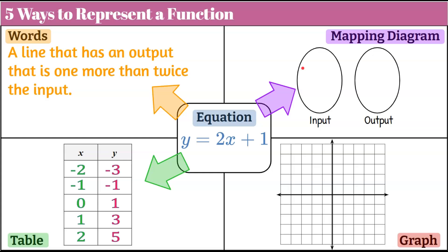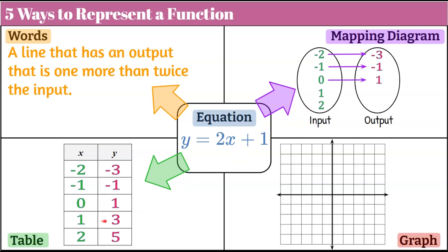Moving on to our mapping diagram. We're going to take our inputs from our table, write them in order from least to greatest, and then map them to their outputs. The input negative 2 will map to an output of negative 3. Negative 1 maps to an output of negative 1. 0 maps to 1. 1 will map to 3. And 2 will map to 5. We know that this is a function because each input has exactly one unique output.